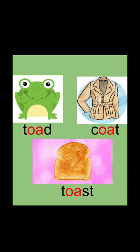These are the vocabulary words in which digraph O-A has come. T-O-A-D, Toad. C-O-A-T, Coat. T-O-A-S-T, Toast. So these are the words in which digraph O-A has come.